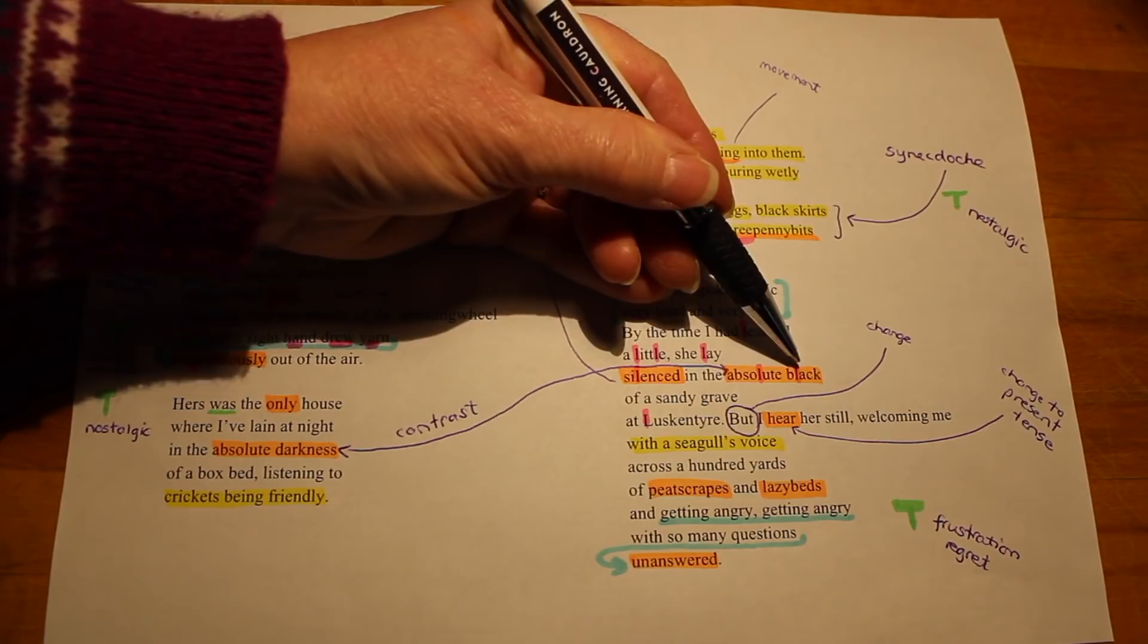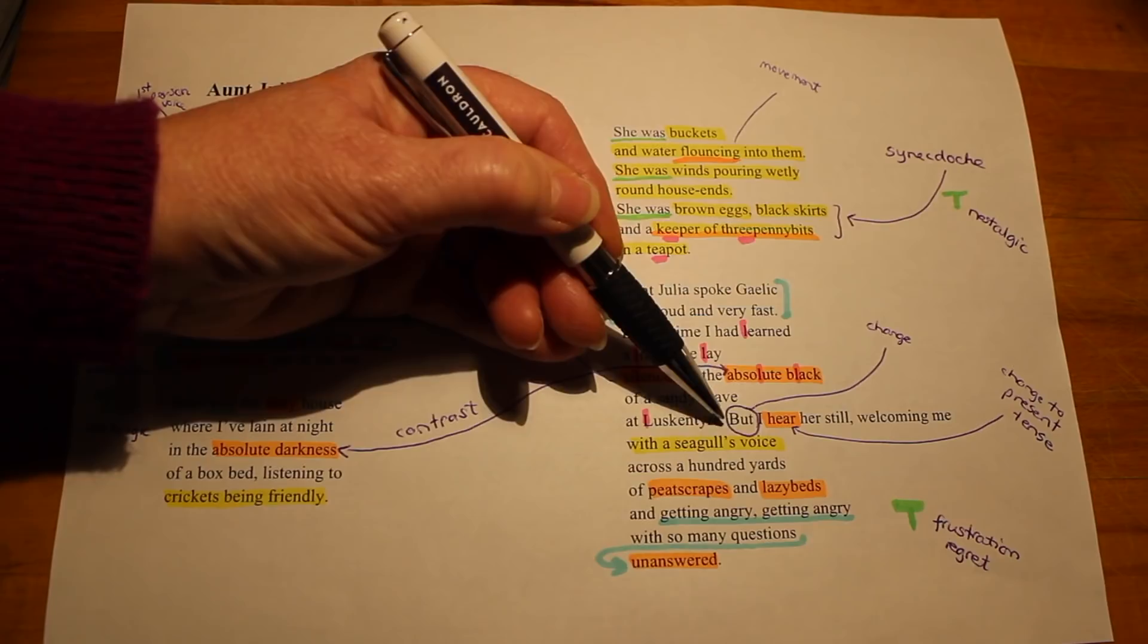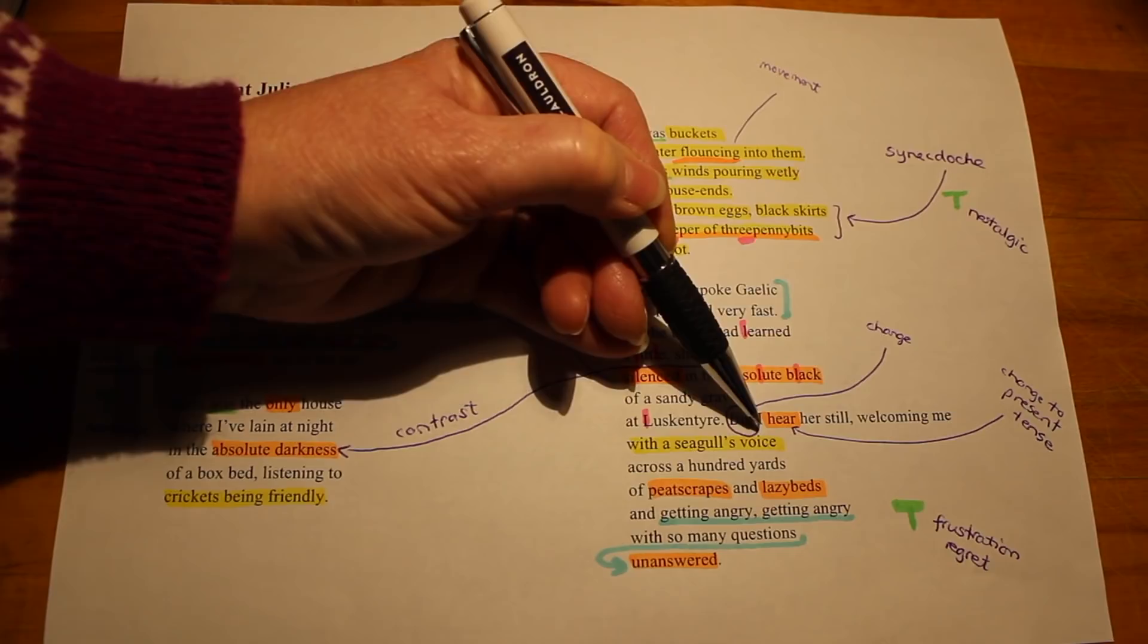Black here symbolizes death, because she is no longer with him. And the sadness is that he had learned some of her language, but it was too late for them to communicate. And then there's a slight change in tone. It becomes slightly more positive, but I hear her still. A change to the present tense here.